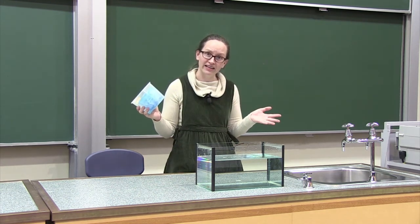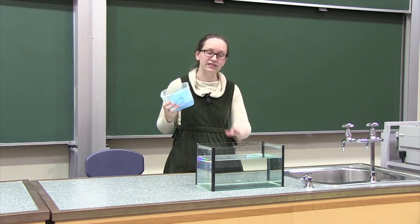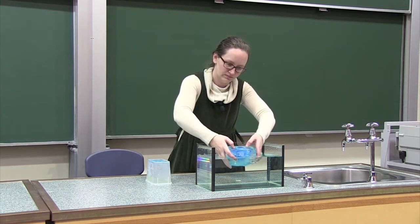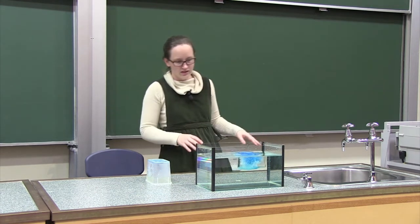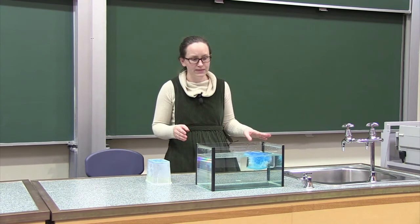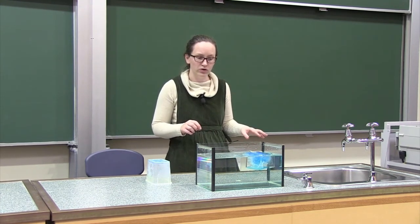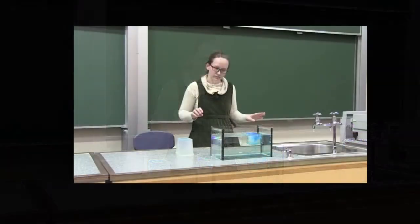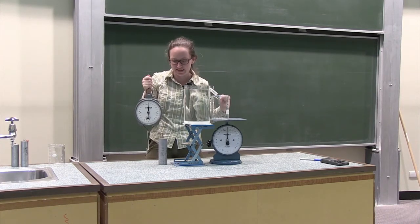Now that we've calculated how much of an iceberg will be underwater, let's have a look at what happens when we put this ice block into the water in the fish tank. You can see, as we expected, the majority of the ice block is underwater and just a small fraction of it is on top of the water.